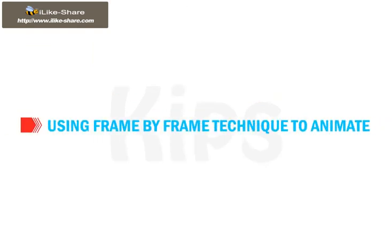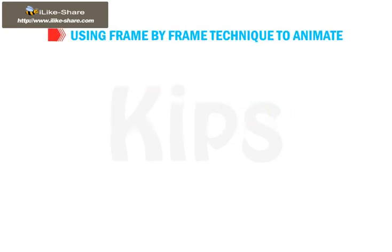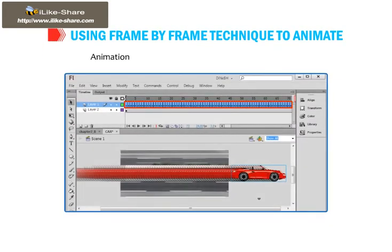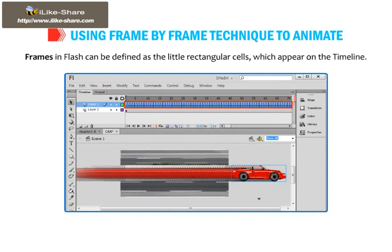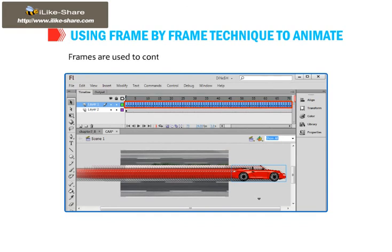Now let's discuss how to use the frame-by-frame technique to animate. Animations in Flash are created with the help of frames. Frames in Flash can be defined as the little rectangular cells which appear on the timeline.